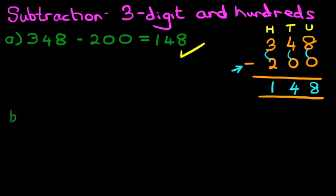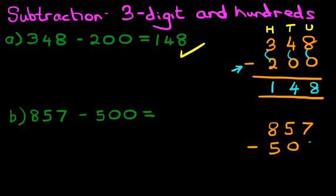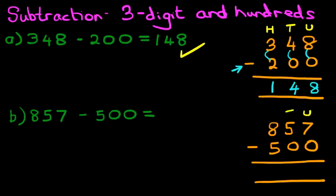Let's work through one more example using slightly higher numbers. What is eight hundred and fifty-seven minus five hundred? The first stage is to rewrite this question in the vertical format: 857 minus 500. And let's label the columns — units on the right-hand side, tens, and hundreds.